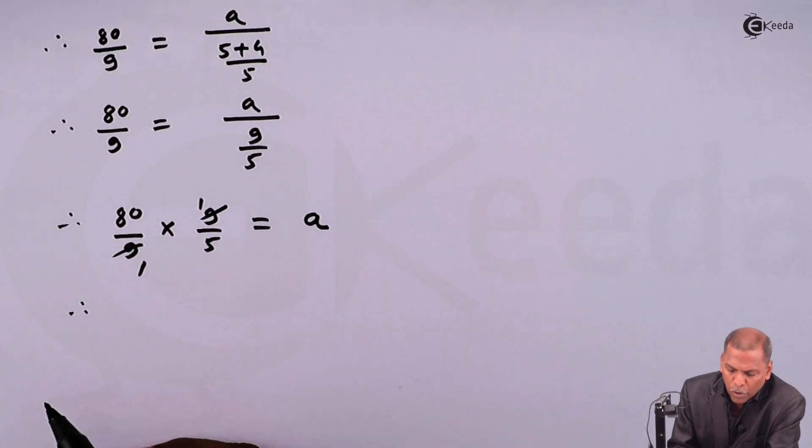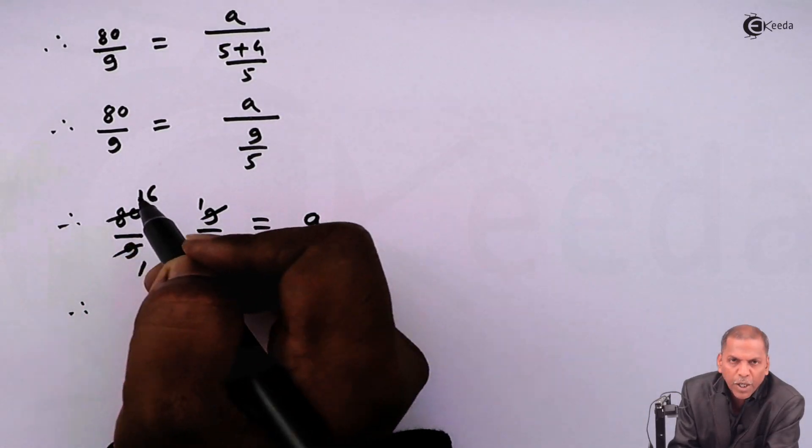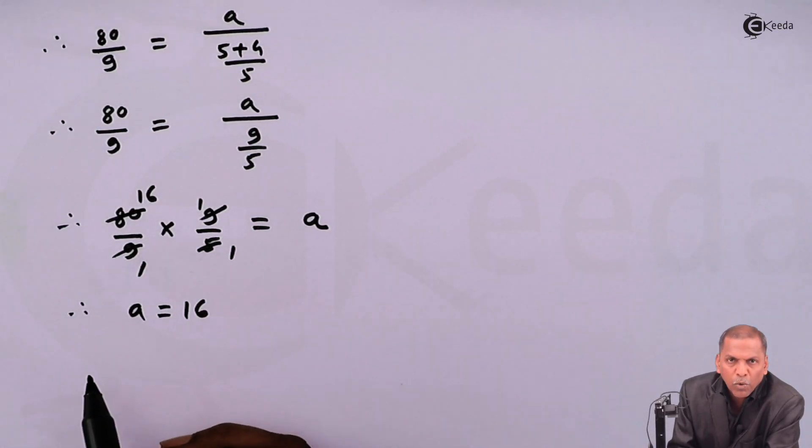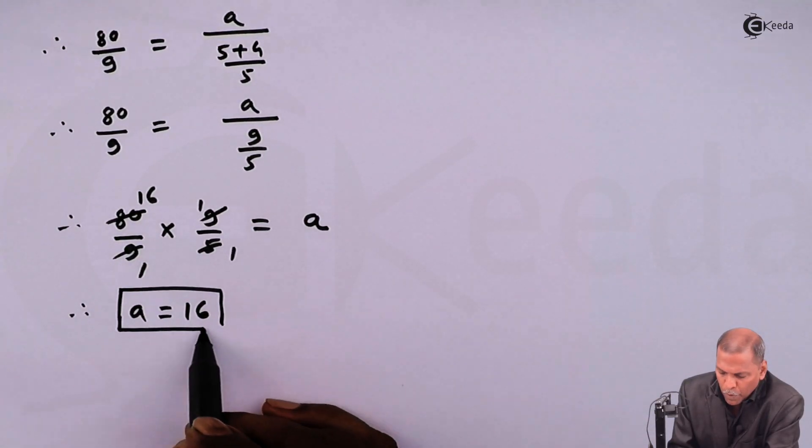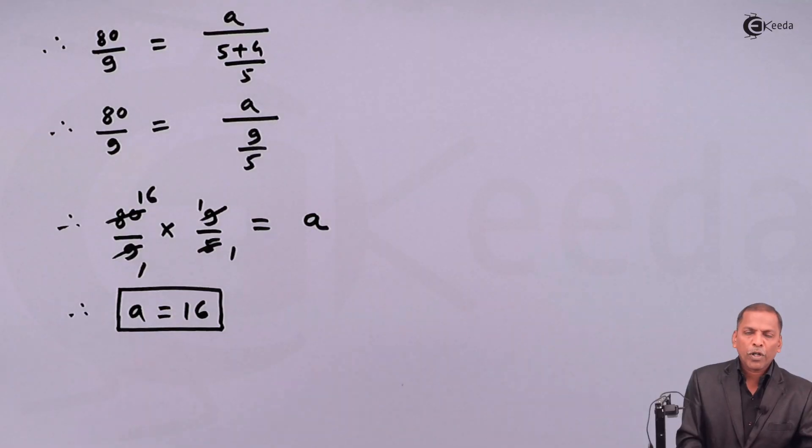Five and five, 16 to 80, so finally we have a equal to 16. Therefore, the first term of GP, that a equal to 16, this is the required solution for the given problem. Thank you.